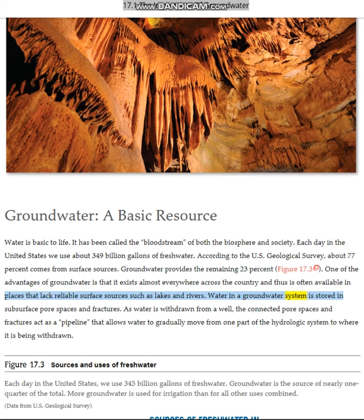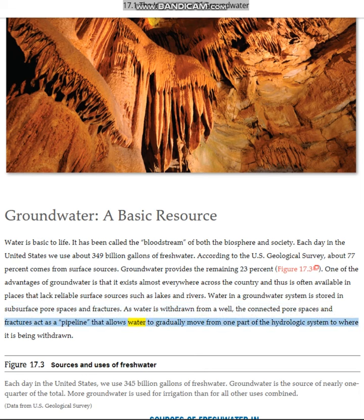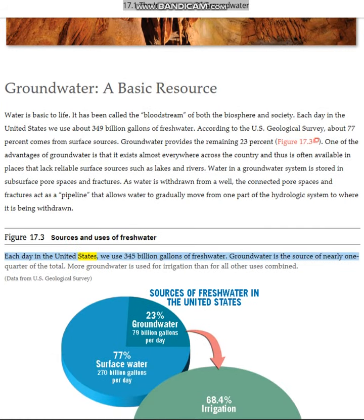Water in a groundwater system is stored in subsurface pore spaces and fractures. As water is withdrawn from a well, the connected pore spaces and fractures act as a pipeline that allows water to gradually move from one part of the hydrologic system to where it is being withdrawn. Each day in the United States, we use 345 billion gallons of fresh water. Groundwater is the source of nearly one quarter of the total, and more groundwater is used for irrigation than for all other uses combined.